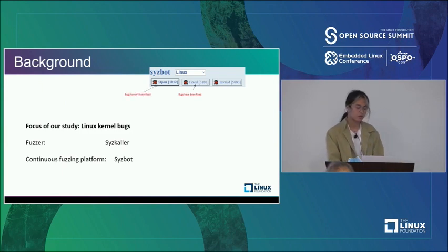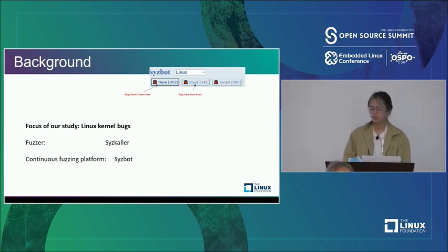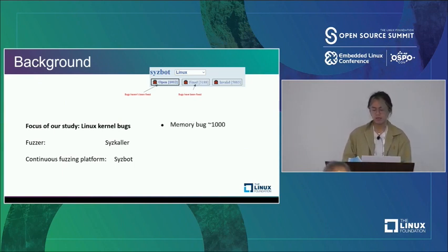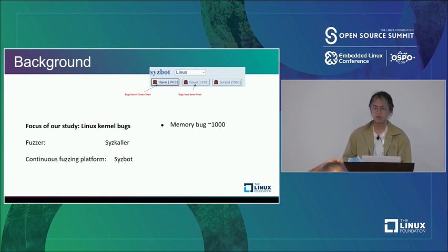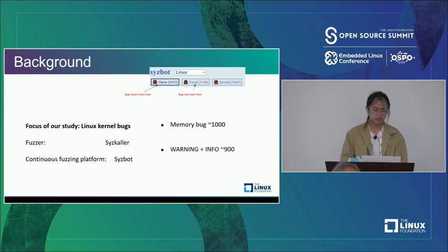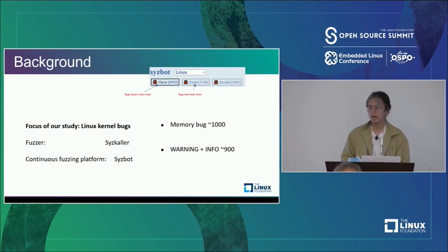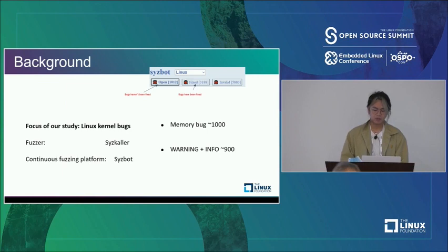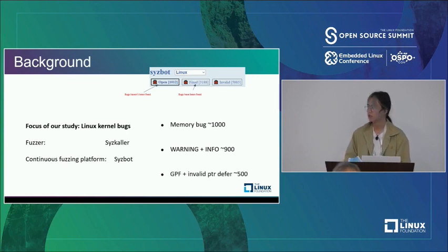Among the 3,000 fixed bugs, the biggest portion is memory bugs — including KSAN and KMSAN bugs — around 1,000 of them. The next biggest portion is warning and info bugs, which report minor issues in the kernel, around 900. The third portion is general protection faults and invalid pointer dereferences, around 500.